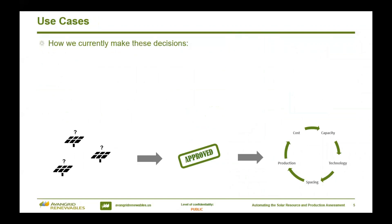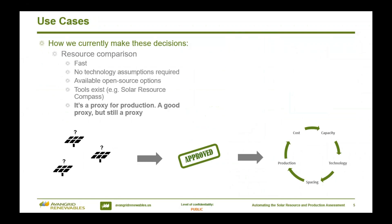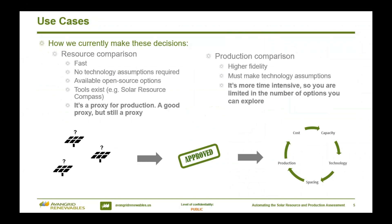So how are we currently making these decisions? We have two options. You can run a resource comparison, which is fast — you don't need to make assumptions on your technology, there are open source options available, NSRDB datasets, tools that exist like Solar Resource Compass. But at the end of the day this resource comparison is a proxy for production — it tends to be a pretty good proxy, but it's still a proxy. Our other option is a production comparison: it's a higher-fidelity analysis but you do have to make those technology assumptions. It's also more time-intensive, which can limit the number of iterations and options you can explore. And that's where automation comes in.